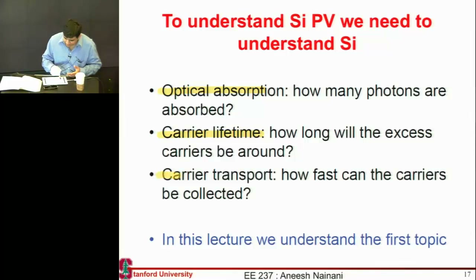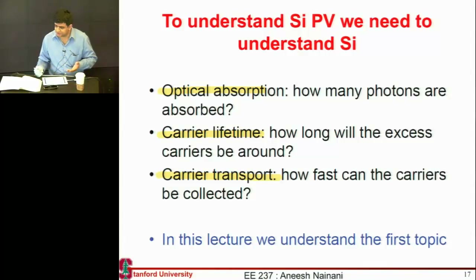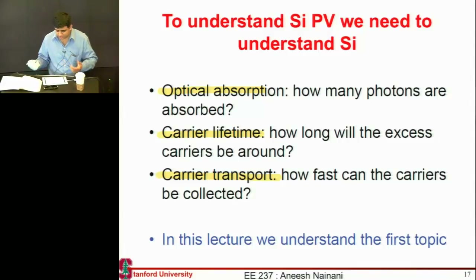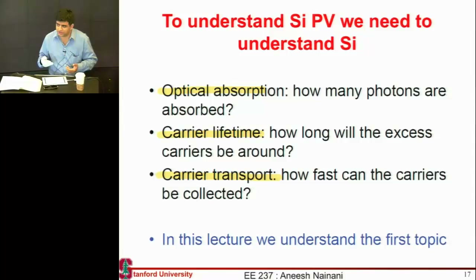The third important thing is you want to have good transport properties for these electron and hole pairs. Once they are generated, they should be fast enough — you should be able to collect them at the contacts quickly before they recombine. All three of these things play a role in determining the overall efficiency of the cell.